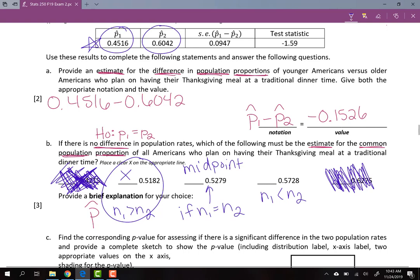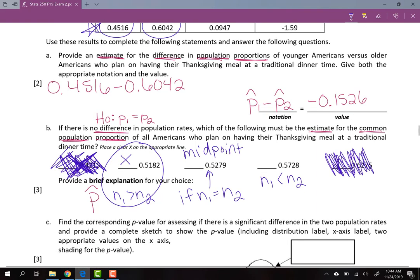So that tells me we have to actually weight more towards the sample value of 0.4516 as opposed to the 0.6042. If N1 equals N2, yes, you should pick the midpoint, the average of the two, 0.5279. If the sample size of group one is larger than group two, you should weight it closer to 0.4516. So the answer for part B is 0.5182 because of that sample size difference and one being larger.